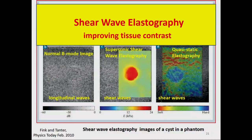One of those possibilities is shear wave elastography. Using longitudinal waves, a cyst buried in a tissue-mimicking phantom is nearly invisible. But by creating shear waves through various methods, you increase the contrast of the image and reveal the cyst. In the case of supersonic shear wave elastography, which utilizes this fast frame rate, it can actually be quantitative and show Young's modulus.